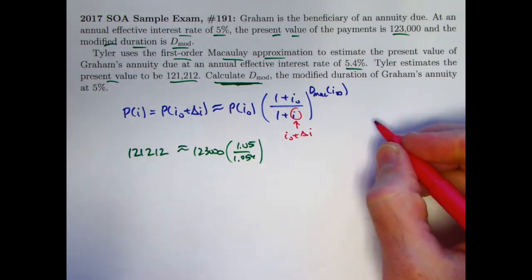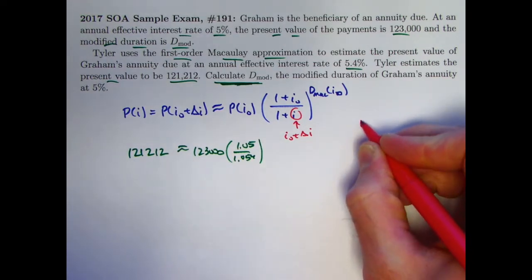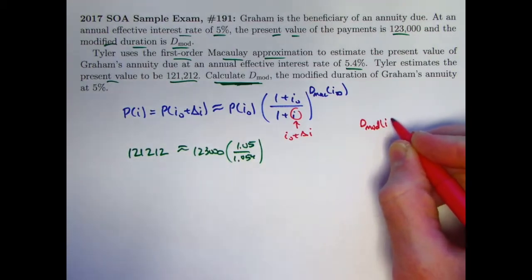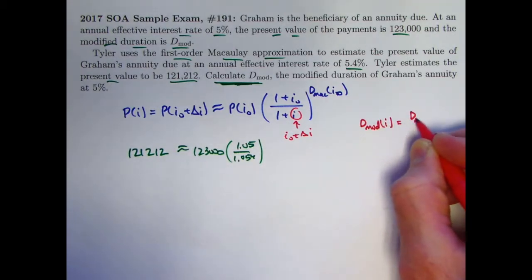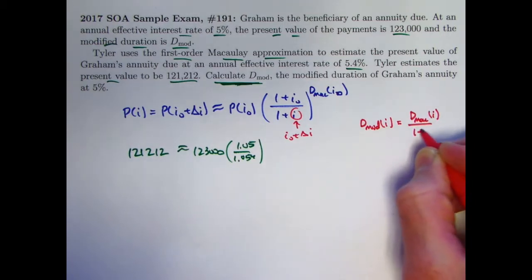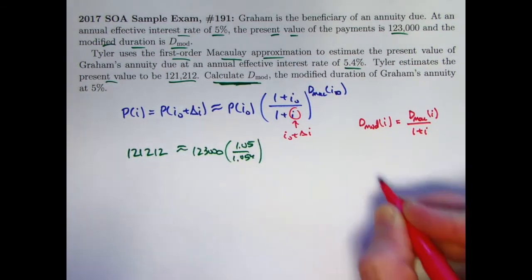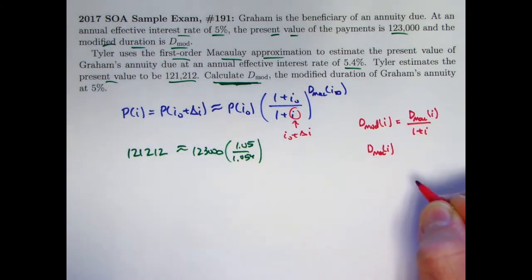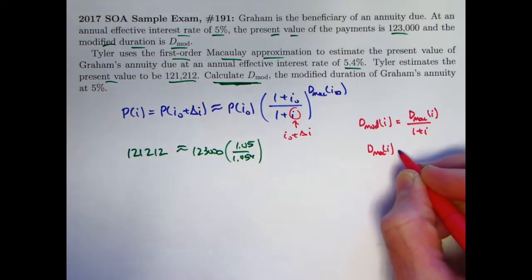The equation defining the modified duration really says the modified duration at an arbitrary interest rate i is the Macaulay duration at that same arbitrary interest rate i divided by 1 plus i. Therefore, to find the Macaulay duration, you don't divide the modified duration by 1 plus i. You multiply it by 1 plus i.